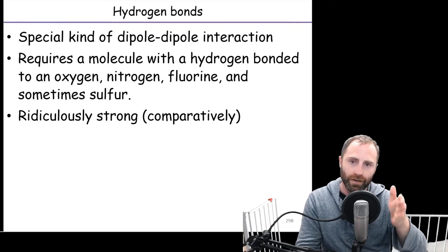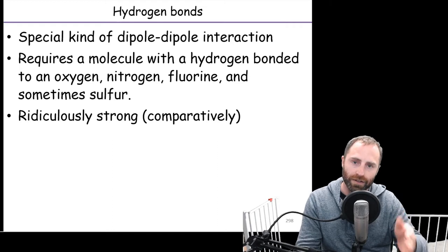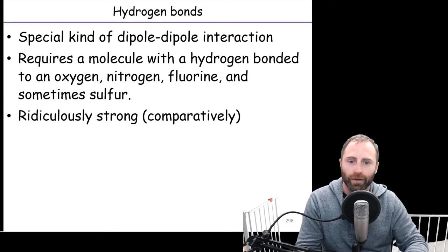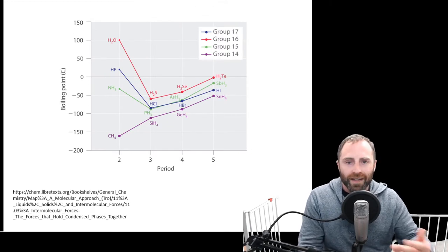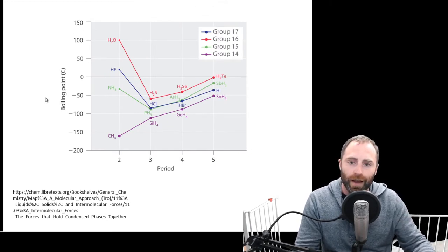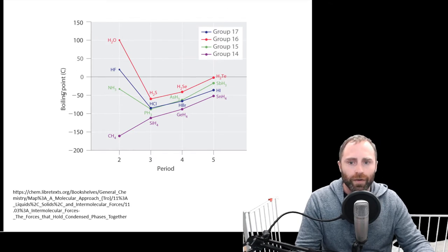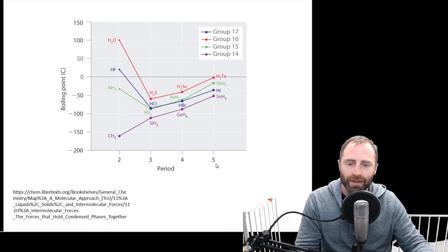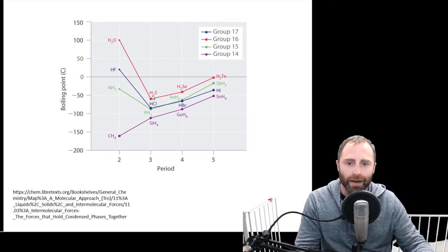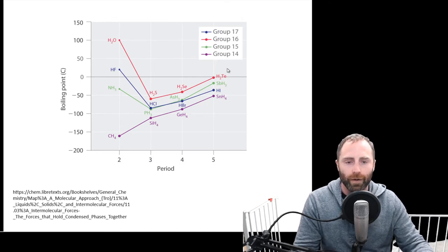If you put these on a scale of strength, you would say dispersion forces, then dipole forces, and then hydrogen bonds. This table we have here will help us articulate why. Let's take a look at these molecules on the far left. Our axes show boiling point increasing up the y-axis, and period — which row in the periodic table the central atom is in — along the x-axis.